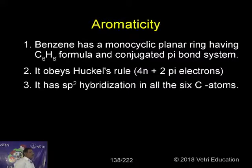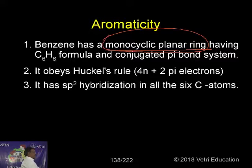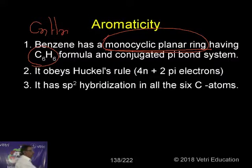Suppose we will consider benzene. It is an aromatic compound. I take this example. So the first question is: a monocyclic planar ring. You should have a monocyclic planar ring having a general formula CnHn. In this case, C6H6. And a conjugated pi bond system.